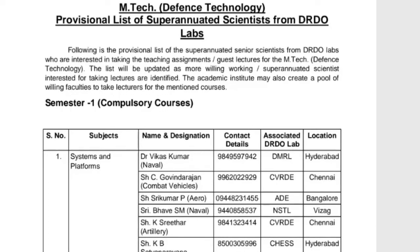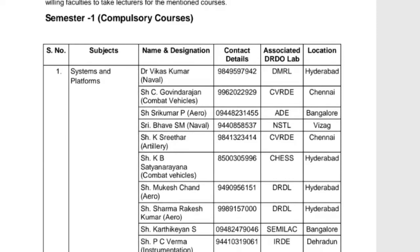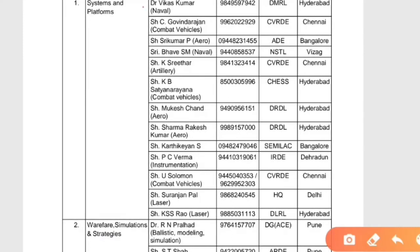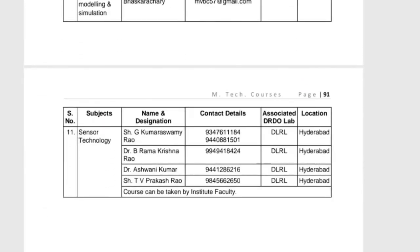Once information is received from the DRDO labs, it will be communicated and intimated. For example, looking at the subject 'Systems and Platforms,' the professors and scientists who will teach it are listed here along with their contact details and corresponding DRDO labs and their locations. In a nutshell, the complete details regarding student selection are pending; only syllabi and course structure have been finalized. This is essentially a collaboration between an institute and DRDO.